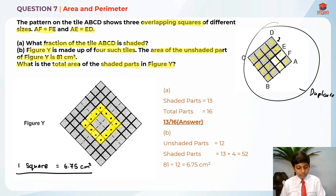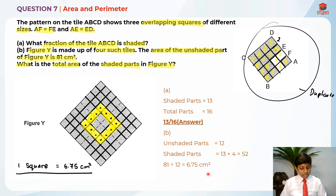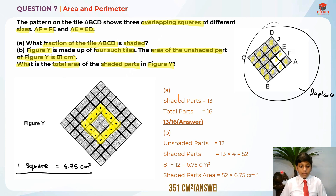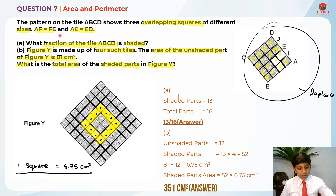This is really important. Now that we know this, it's easy to find the total area of the shaded parts. We know the number of shaded parts is 52, and one square is 6.75 cm². So the area of the shaded parts = 52 × 6.75 = 351 cm². This is the answer for part B. I hope you understand my explanation for question 7, testing us on area and perimeter. Thank you and bye-bye, I'll see you in my next video!